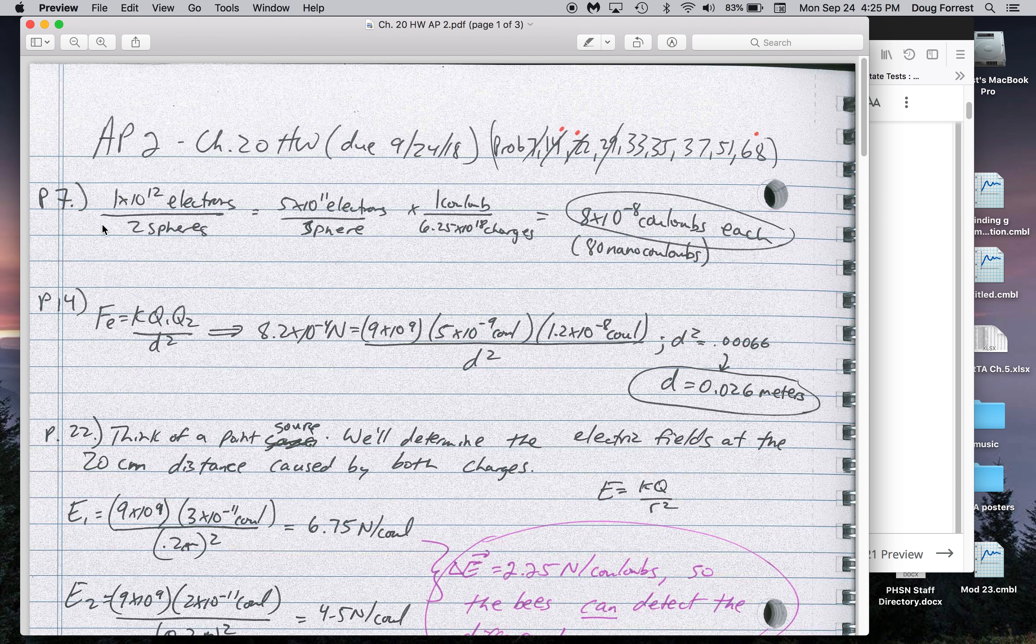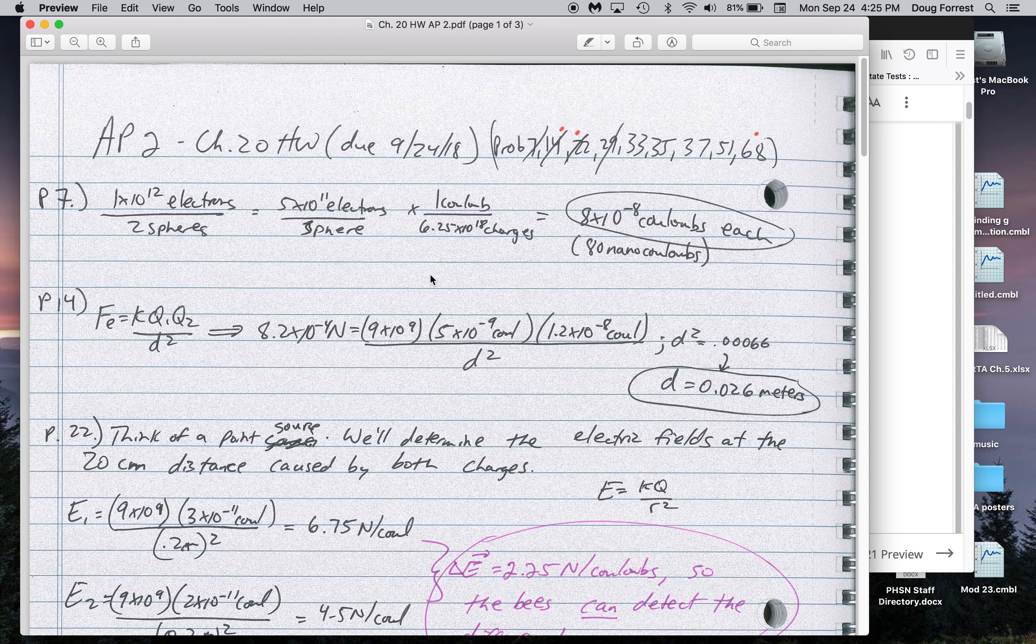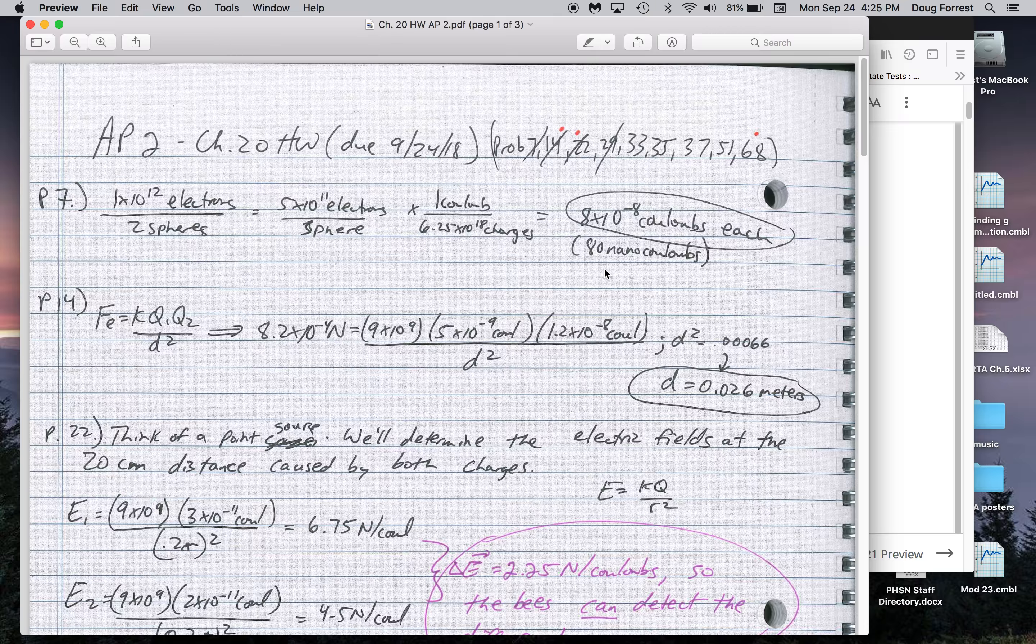So first of all, problem number seven. If you've got this many charges for two spheres, it's half that many per sphere. You just need to convert that from charges to Coulombs. So that's the conversion factor, or you could have multiplied it by 1.6 times 10 to the negative 19th Coulombs per charge. We've gotten the same answer.